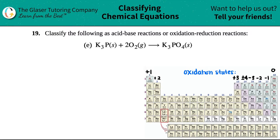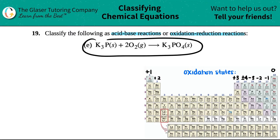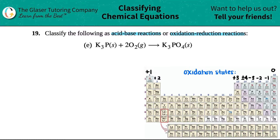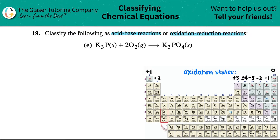Number 19. Classify the following as an acid-base reaction or an oxidation-reduction reaction. We have letter E out of the bunch. We need to know if this equation, K3P plus 2O2(s) yields K3PO4, is an oxidation-reduction or an acid-base reaction.